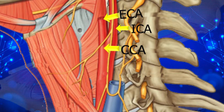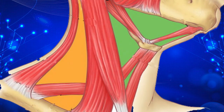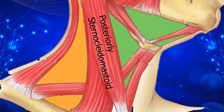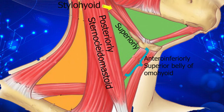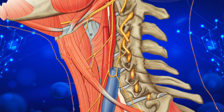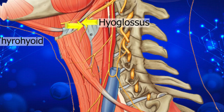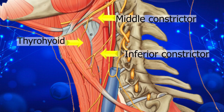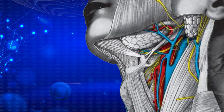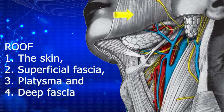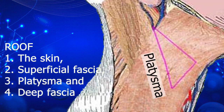We will look at the boundaries of the carotid triangle. Posteriorly, it is limited by the sternocleidomastoid; inferiorly by the superior belly of omohyoid; and superiorly by the stylohyoid muscle and the posterior belly of the digastric muscle. The floor is formed by the hyoglossus muscle, thyrohyoid muscle, and the middle and inferior constrictor muscles of the pharynx. The roof is formed by the skin, superficial fascia containing the platysma muscle and the cervical branch of the facial nerve, and also the deep fascia.